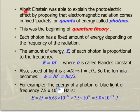Albert Einstein was able to explain the photoelectric effect by proposing that electromagnetic radiation, simply the light from the sun, comes in fixed packets, or quanta, of energy called photons. This was the beginning of quantum theory.